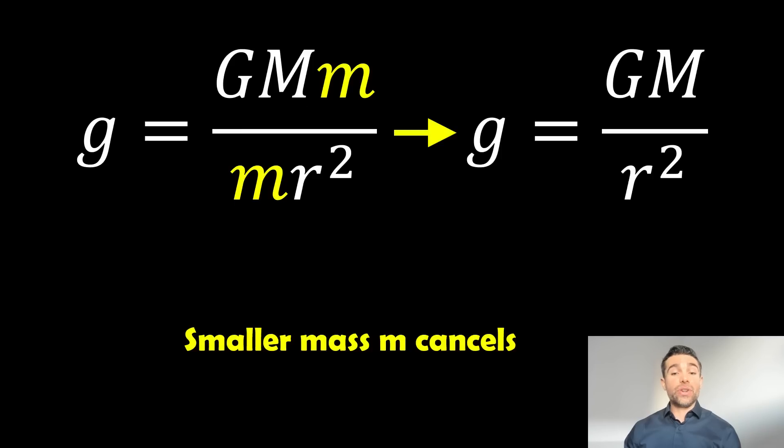So if we do that, we should end up with something like this here. So now our surface gravity is essentially equal to the gravitational constant times the two masses divided by the mass R squared. But we have the smaller masses on the top and the bottom, so they cancel. So we're left with just the gravitational constant times the mass of the larger object, which could basically be the Earth here, divided by the distance separating the two objects.